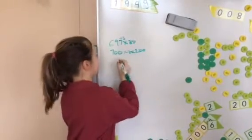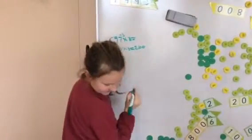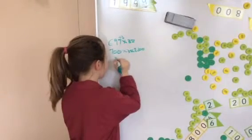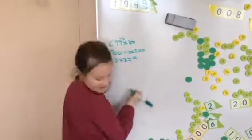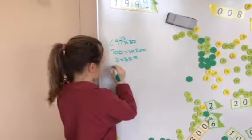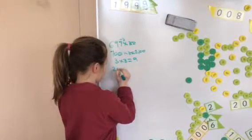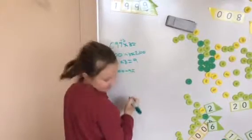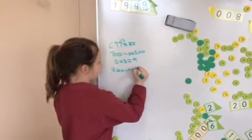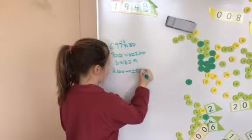And then you go 3 times 3, and that equals 9. And then you go 2,100 minus 9, and that equals 2,091.